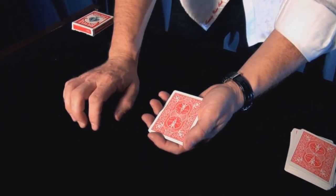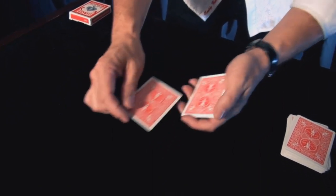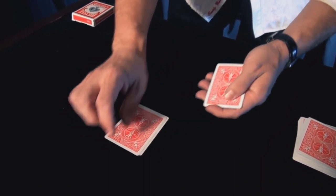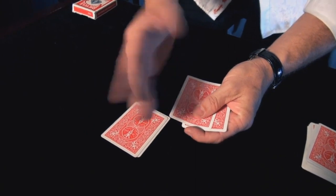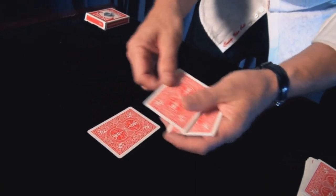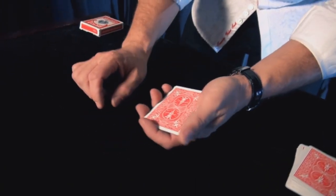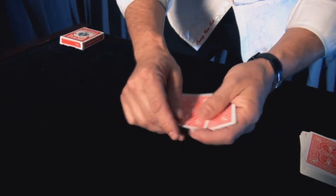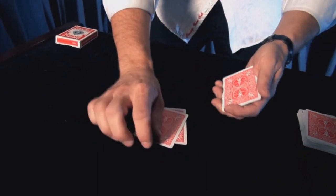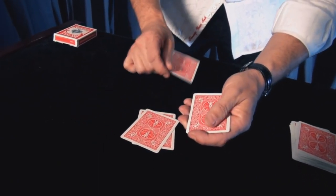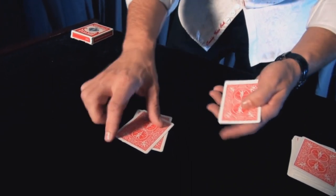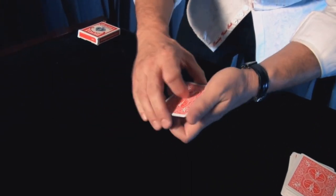The first technique that we can use is called a crimp. And here's what a crimp is. A crimp is whenever you place a tiny bend in the corner of a playing card. Now why is that important? If you have a tiny bend in the corner of one of those aces, if I was dealing these cards, as I deal through the cards, once I feel that tiny bend, I can then deal that card to myself. That technique is known as the crimp.